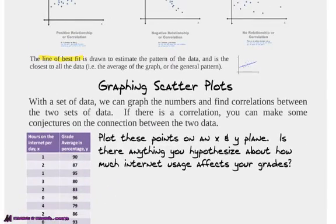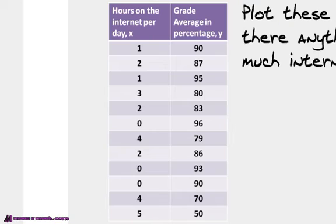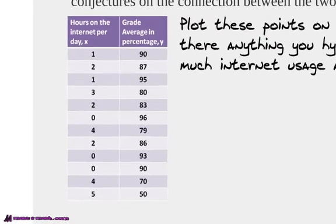Well, let's graph a scatter plot now. Given a set of data, we can graph numbers and see what kind of correlation we get. We're going to plot these points on the X and Y graph, and I want you to then see if you can find any correlation. Here's our hours on the internet per day, and these are your grade averages in school. So, what you would do is you take your first point would be on 1,90. Your second point would be at 2,87, next point would be 1,95, and you're putting a dot on each of these particular points. A dot on each of those points.